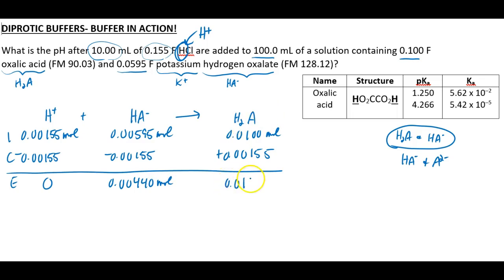Now we've got something that we can plug into the Henderson-Hasselbalch. So it'll be pH equals, well, since my buffer contains H2A and HA minus, I'm going to be using pKa1. So that's 1.250 plus the log of the moles of HA minus, 0.00440 moles of HA minus over the moles of H2A. Okay, 0.115 with an insignificant 5 moles of H2A.